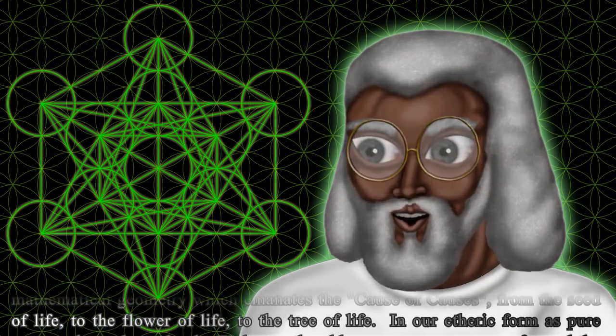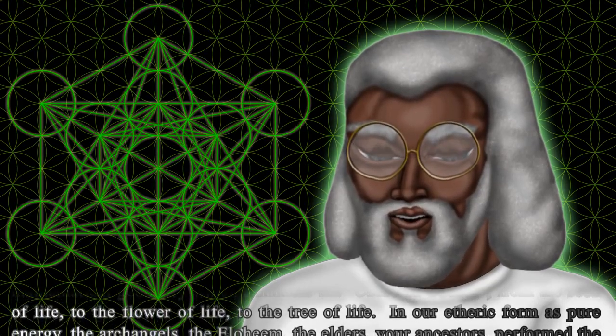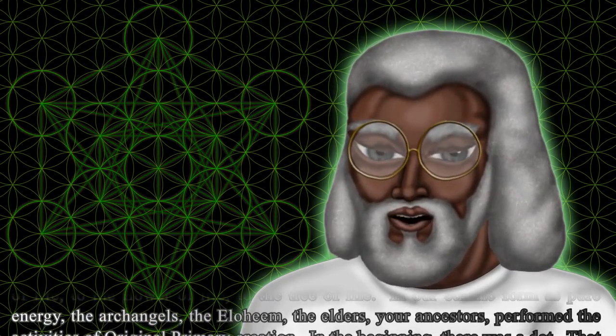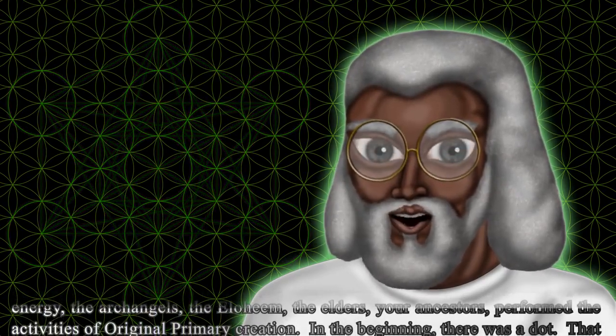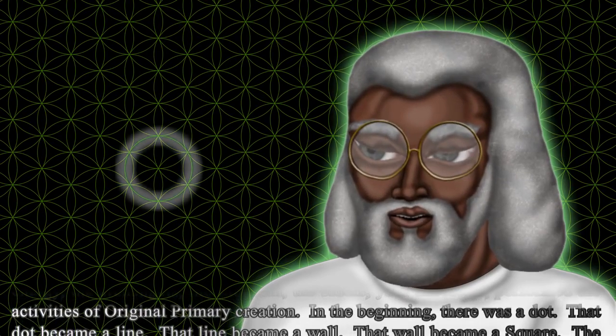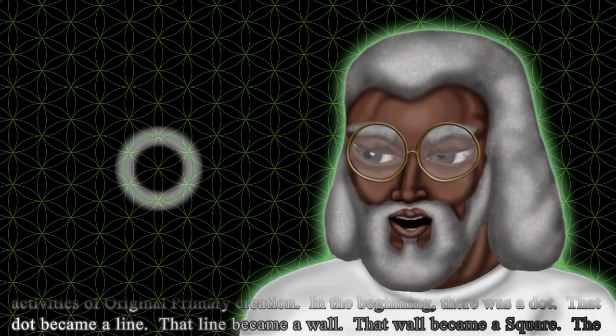In our etheric form as pure energy, the Archangels, the Elohim, the elders, your ancestors, performed the activities of original primary creation. In the beginning, there was a dot. That dot became a line. That line became a wall.